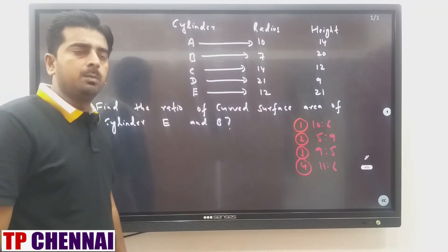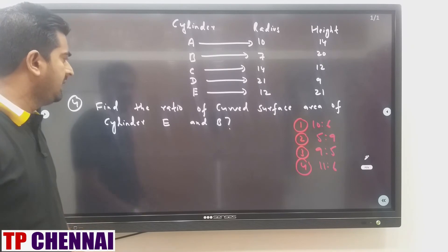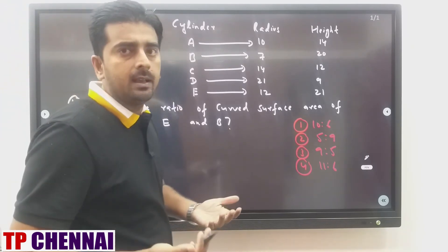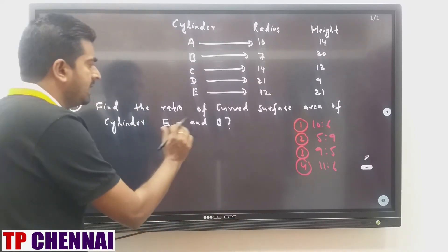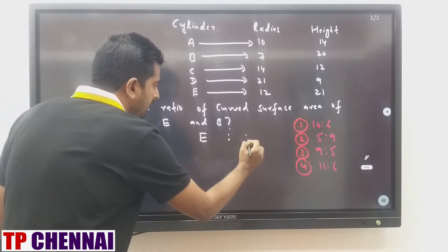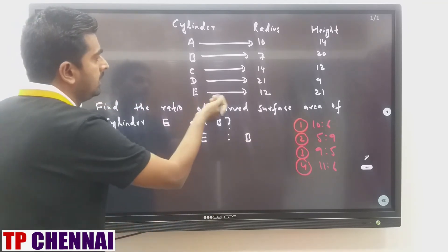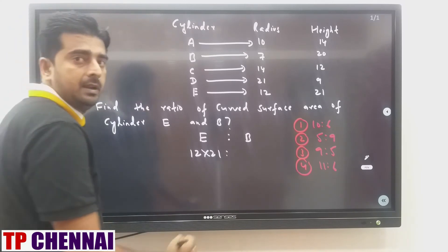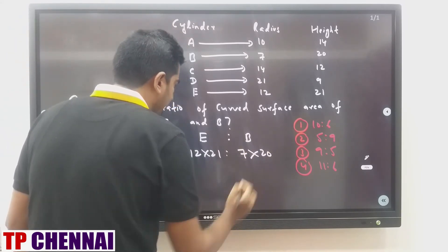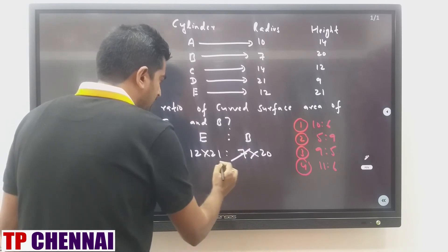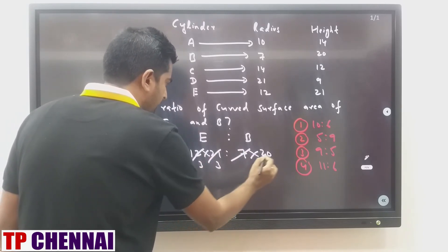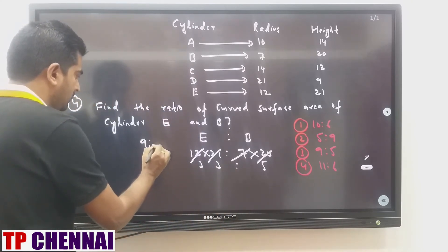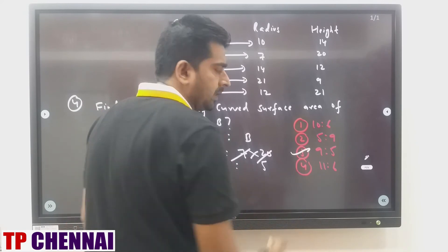Question 4: find the ratio of curved surface area of cylinder E and B. Formula = 2πRH, so 2π cancels. Just take R × H. Cylinder E: R = 12, H = 21, product = 252. Cylinder B: R = 7, H = 20, product = 140. Ratio = 252:140 = 9:5. Answer is the third option.